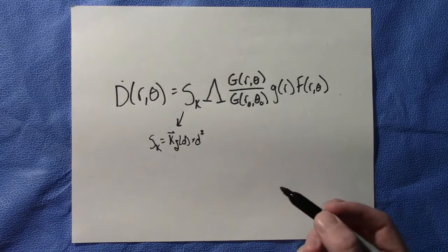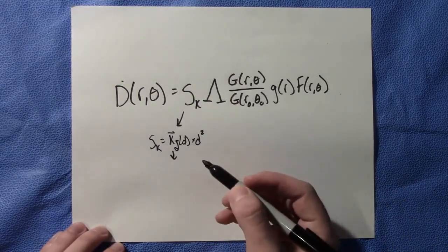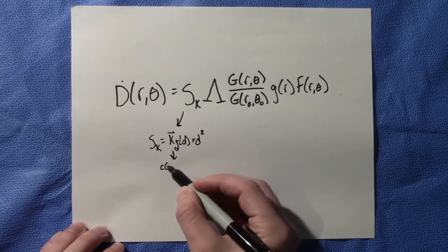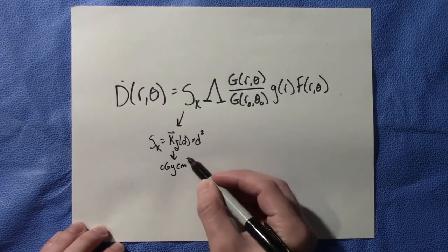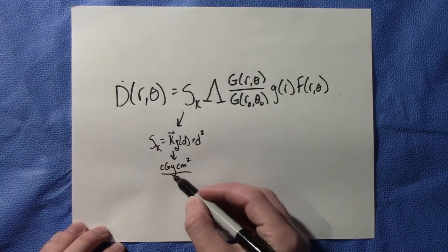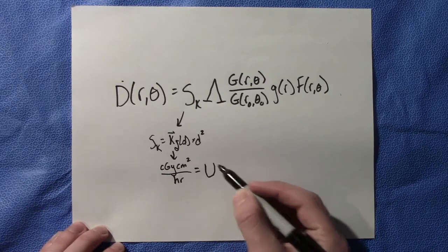So the units here, which will definitely be something that may be of interest not only to you, but examiners or testers if you were just studying in general, is centigrade cm squared per hour. And for shorthand reasons, we consider that a U. So that is a unit.